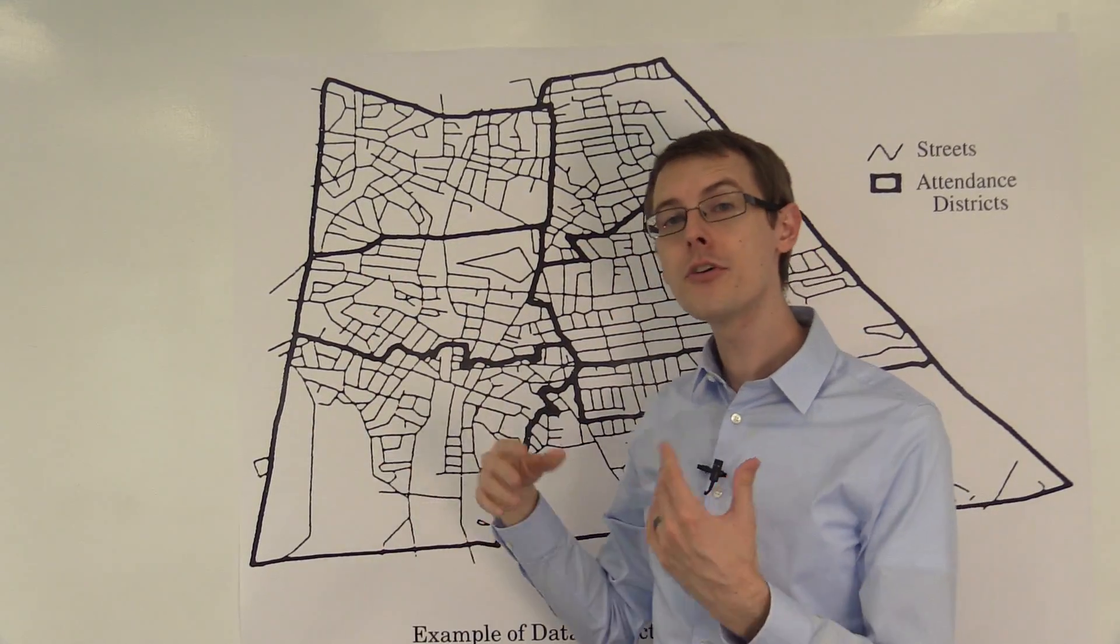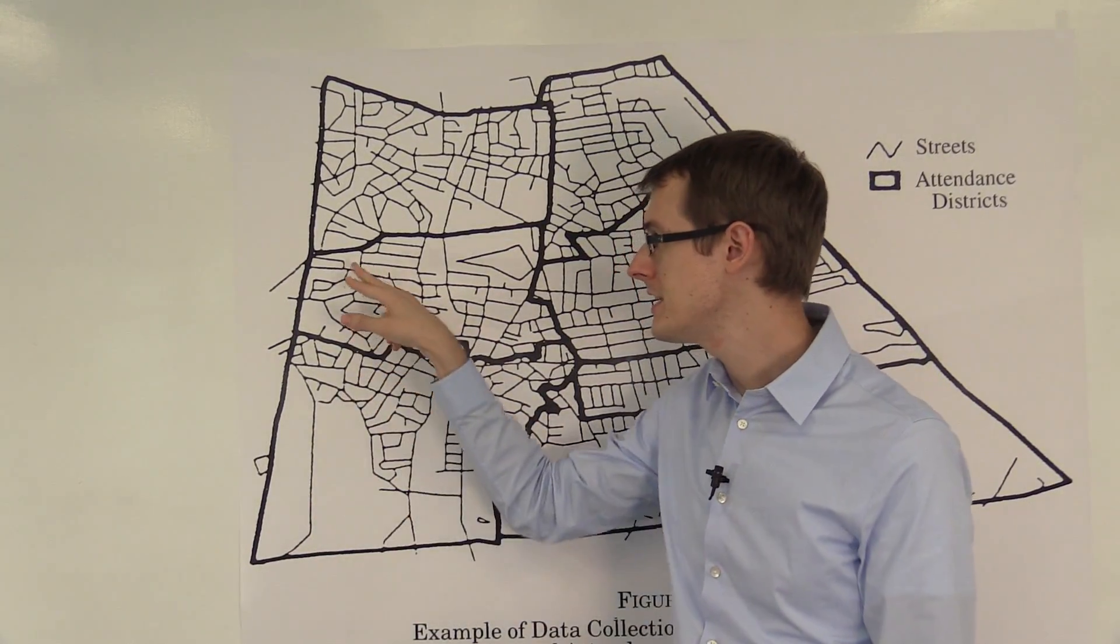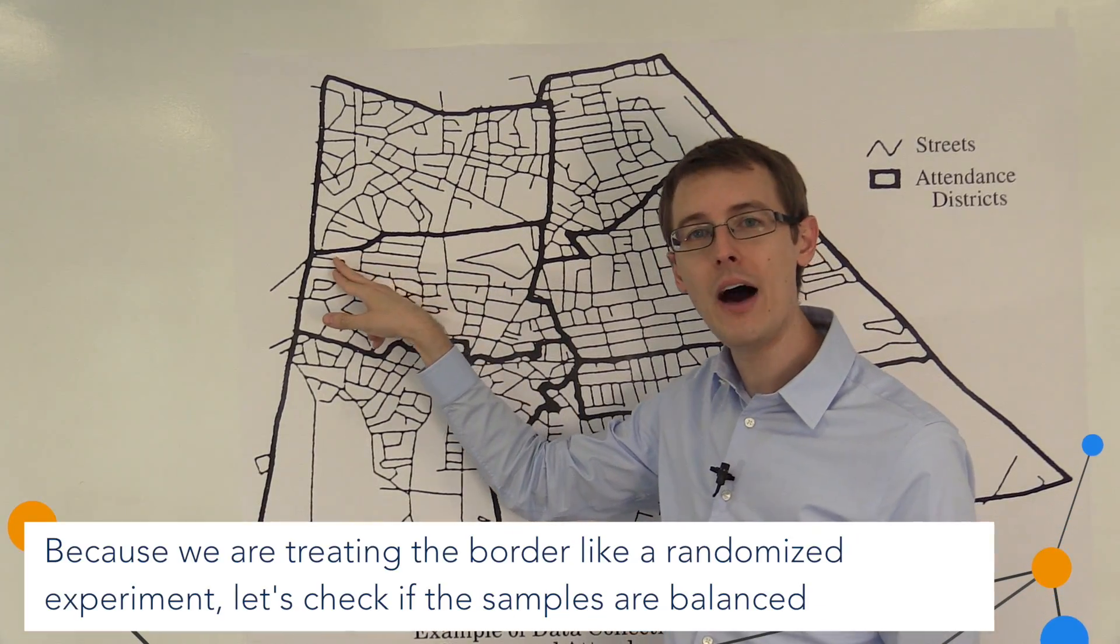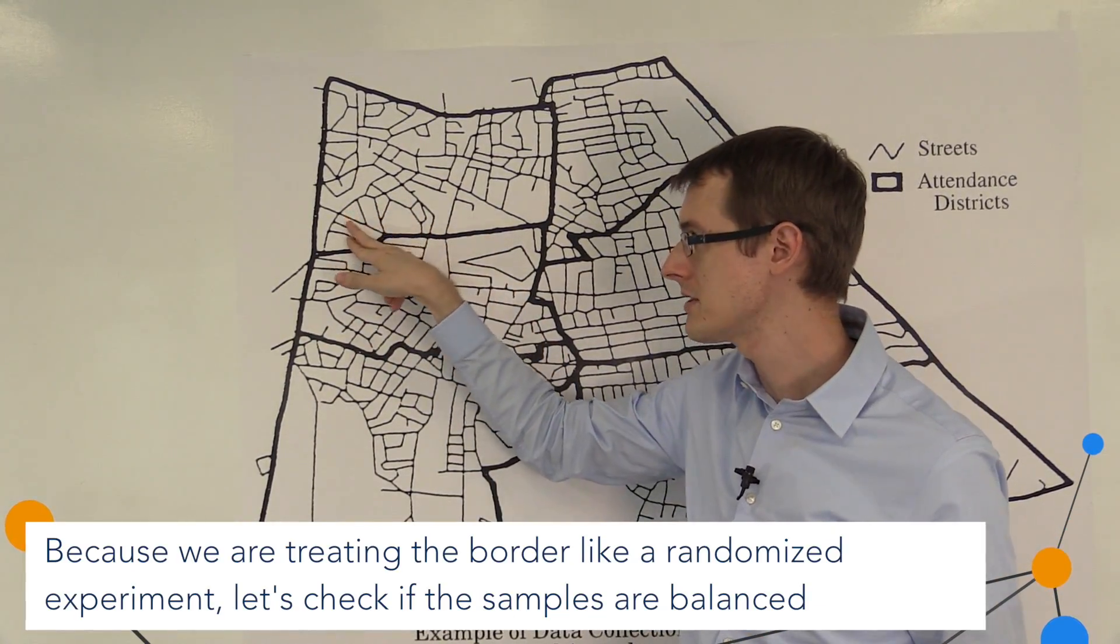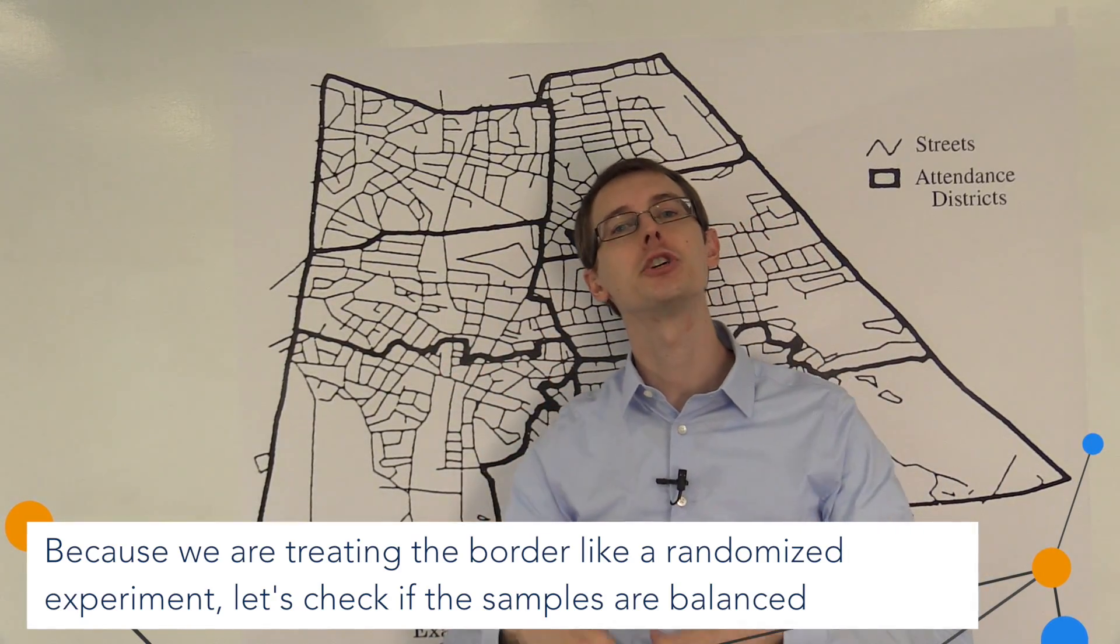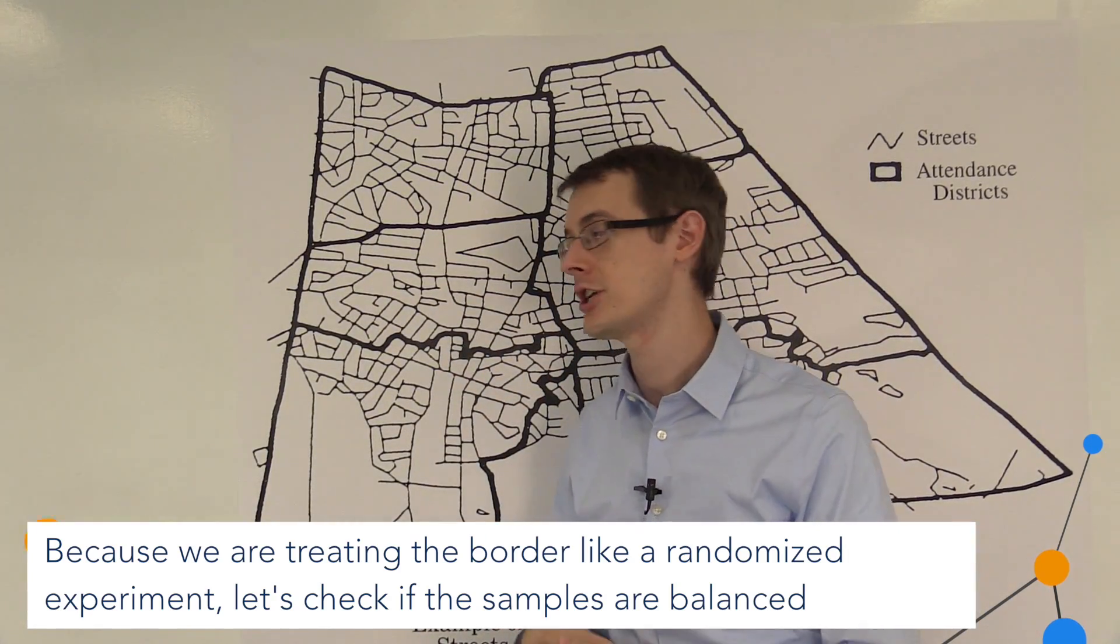We can look at other variables, other covariates of interest for these houses, and compare the average values of those variables for the houses in the control with the houses in the treatment group. And they should be the same, they should be balanced. That's what a balance check does.